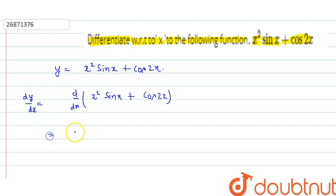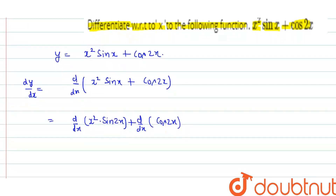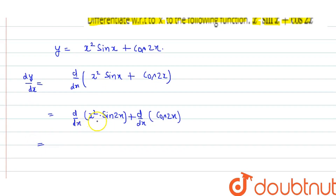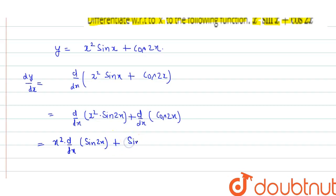So, differentiating with respect to x: d by dx of x squared sin x, plus d by dx of cos 2x. Here, x squared sin x is the product of two functions, so we apply the product rule. That gives us x squared into d by dx of sin x, plus sin x into d by dx of x squared. And here, cos 2x is also to be differentiated.